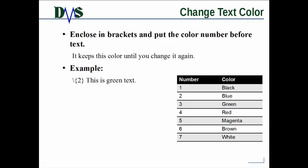Okay, let's say also you wanted to change the text color. We live in the modern age, computers can do color. You can do this with the note command. So you can enclose in brackets and put the color number before the text. And it will keep that color until you change it again. So number one, how do you do that? Here's the example. We've got our backslash to start our note command. In brackets, and then we have the number two. Now if you look over here at the color table, this is a table you can get out of the GHS reference manual. The number two will create a blue colored text. So we've got two in brackets, and then whatever the text is.